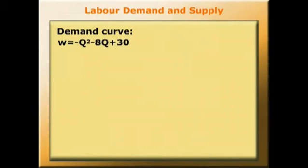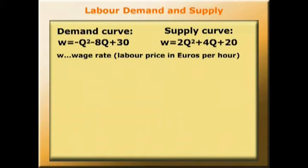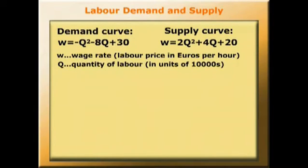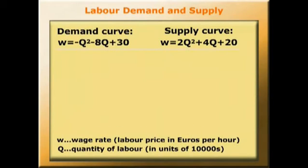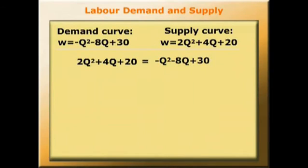The demand curve we're going to use is w = -q² - 8q + 30, where w is the wage rate — the labour price — in euros per hour. The supply curve is given as w = 2q² + 4q + 20, where q is the quantity of labour in units of 10,000. So although we've got power terms here, we still have a downward sloping demand curve and an upward sloping supply curve. In equilibrium, supply equals demand, so: 2q² + 4q + 20 = -q² - 8q + 30.